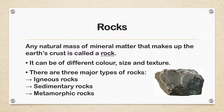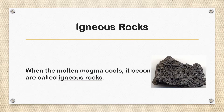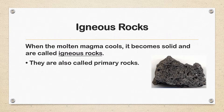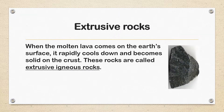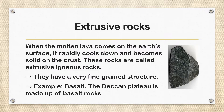Let us discuss the first type — igneous rock. When the molten magma cools, it becomes solid and these are called igneous rocks. They are also called primary rocks. There are two types: intrusive and extrusive rocks. Extrusive rocks — when the molten lava comes on the Earth's surface, it rapidly cools down and becomes solid on the crust. These rocks are called extrusive igneous rocks. They have a very fine-grained structure. Example: Basalt.